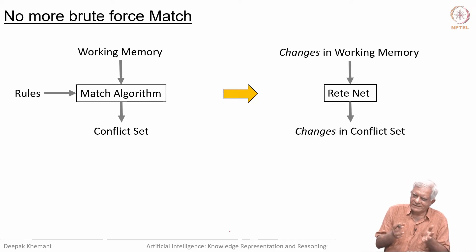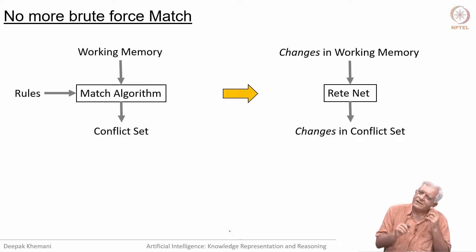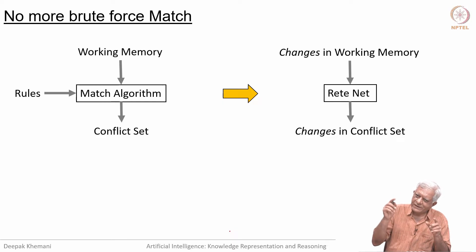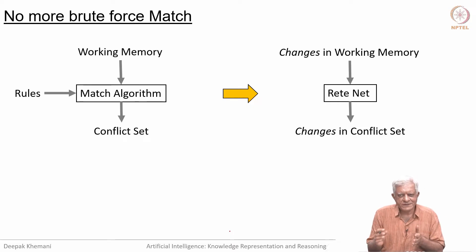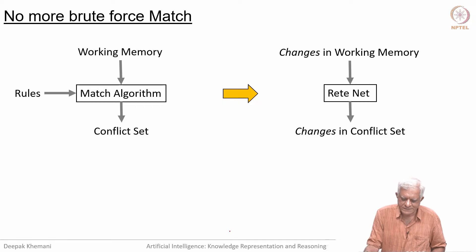The RETE net, as we will see, will look at every working memory element exactly once, and in that process it will identify which rules it matches. Furthermore, in the next cycle, it will remember all the matches that it has done in the last cycle, which of course is the key to savings.